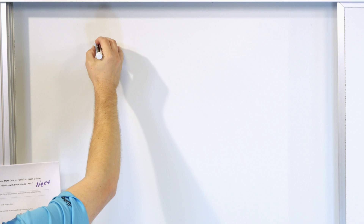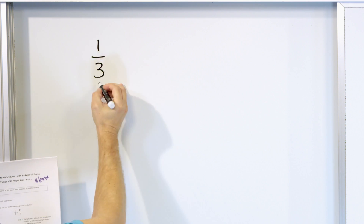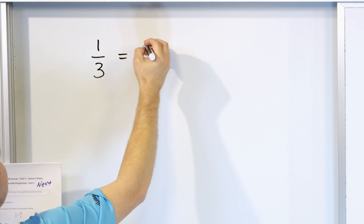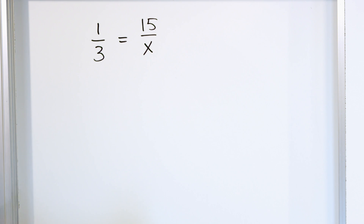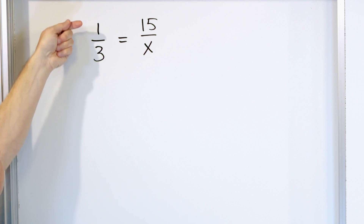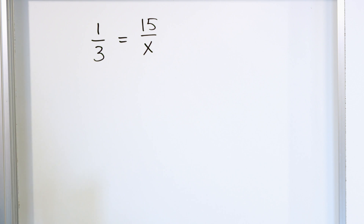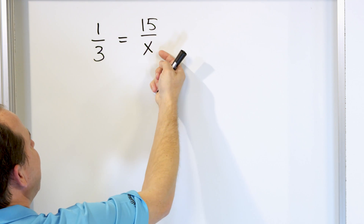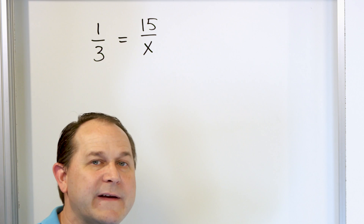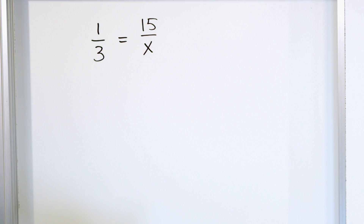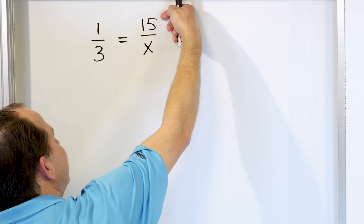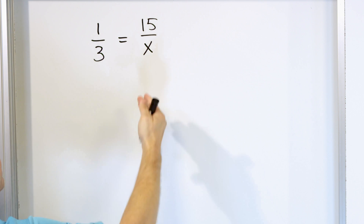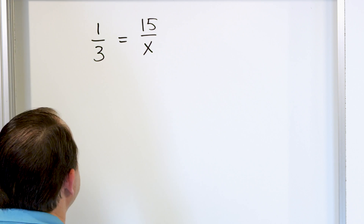What if we have the proportion — which is just an equation — one-third, or one as compared to three, is equal to 15 as compared to x? So x is the unknown number. We're asking: if we have the relationship one as it compares to three, then if we have 15, what number do we need down here to have the same relationship?